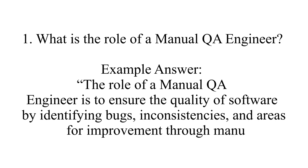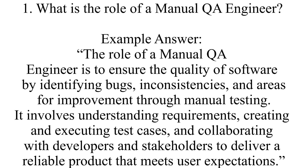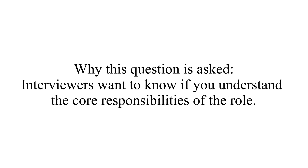Question one: What is the role of a manual QA engineer? The role of a manual QA engineer is to ensure the quality of software by identifying bugs, inconsistencies, and areas for improvement through manual testing. It involves understanding requirements, creating and executing test cases, and collaborating with developers and stakeholders to deliver a reliable product that meets user expectations. Interviewers want to know if you understand the core responsibilities of the role.